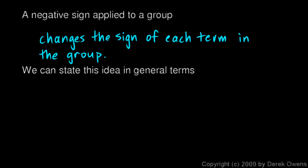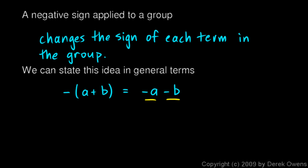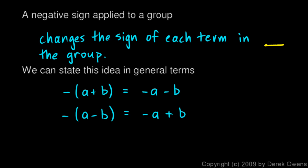And as always, we can state this concept in general terms using variables. Let's say negative (a plus b). For any numbers a and b, that will equal negative a plus negative b, which we could write as negative a minus b. So the a and b inside the parentheses we can think of as both positive, and this negative sign changes the sign of each. We now have a negative a and a negative b. And we could also say: negative (a minus b) — this negative sign takes the a and changes it to negative, giving us negative a, and the minus b becomes a plus b. So negative (a minus b) equals negative a plus b. The negative sign applied to the group changes the sign of each term in the group.